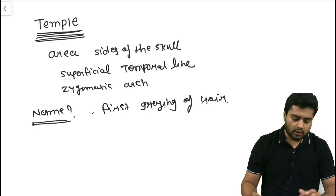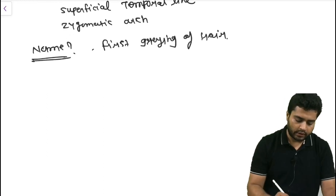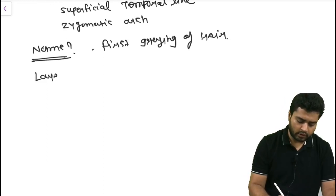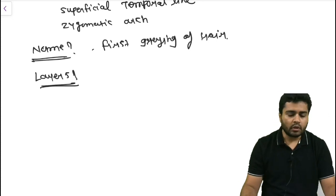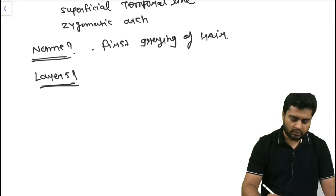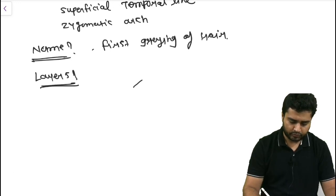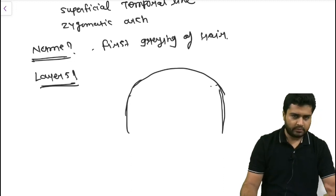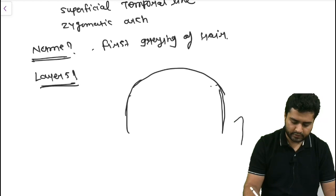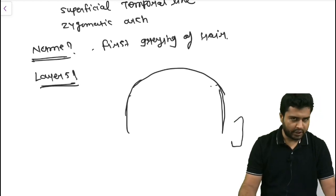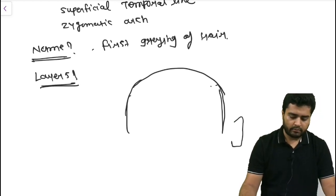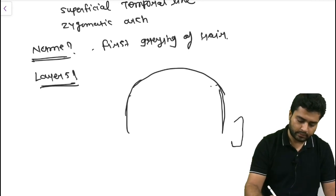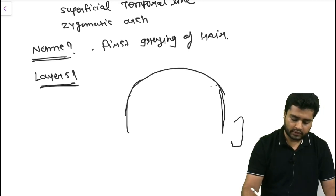Now what are the layers of this region? Let's draw the diagram. Remember, just like the skull on the sides — I am just doing a schematic diagram — and with the pinna, I am drawing the diagram of the temple.